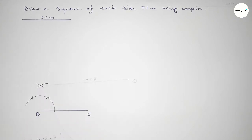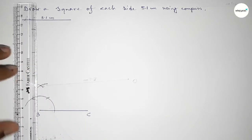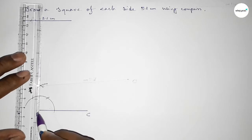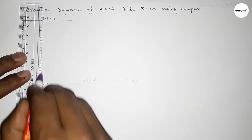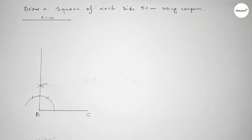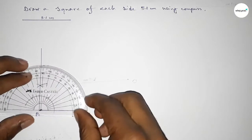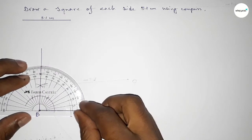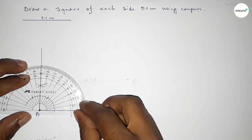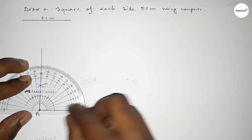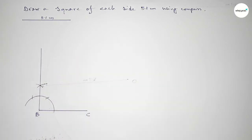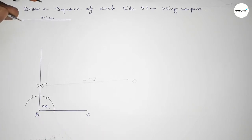Both curves intersect at a point. Joining this side to get a 90 degree angle. Checking — this is perfectly a 90 degree angle.